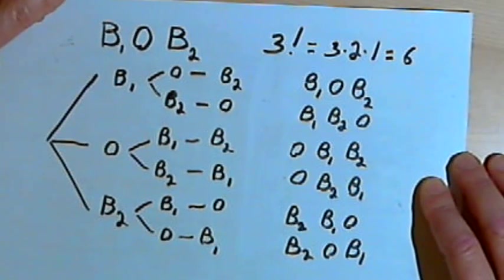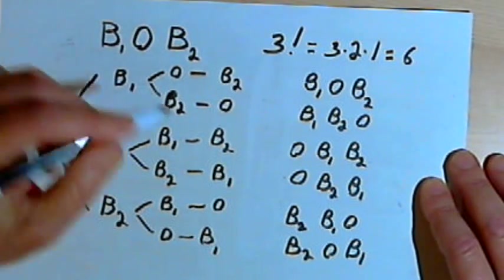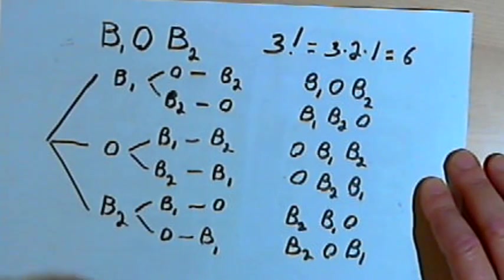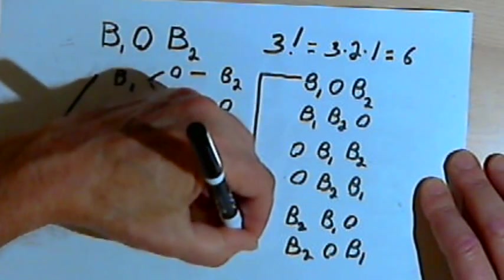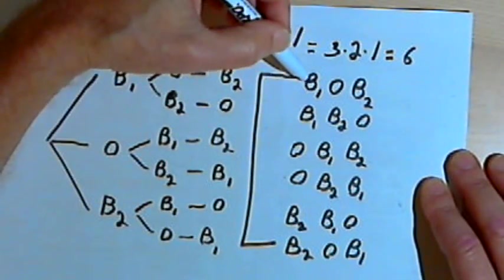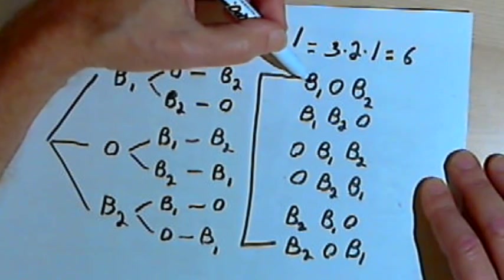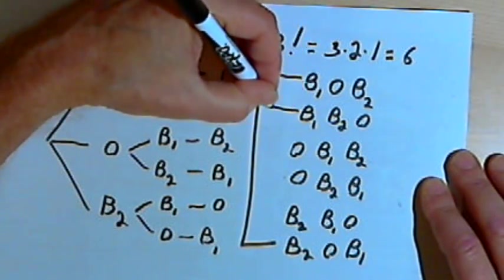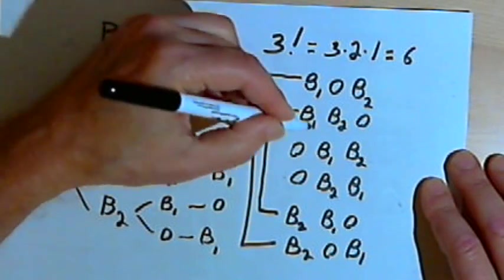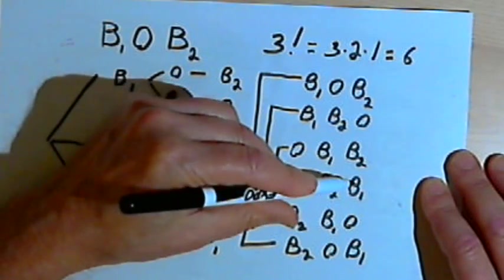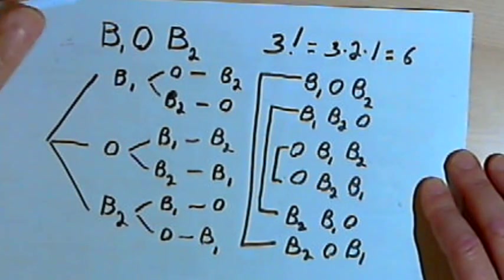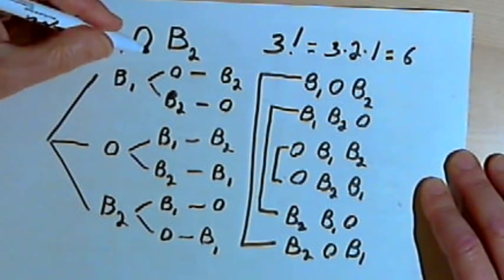But the only reason I can say I have six permutations is because I added those subscripts. If I disregard the subscripts, the sub 1 and the sub 2, then it turns out that I've got two permutations that are the same with B-O-B, and two more permutations that are the same with B-B-O, and two more permutations that are the same with O-B-B. So I've really only got three different permutations for the letters B-O-B once I disregard the subscripts.